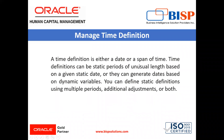What is the time definition? A time definition is either a date or a span of time. Time definitions can be a static period of unusual length based on a given static date, or they can generate dates based on dynamic variables.